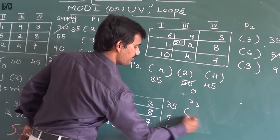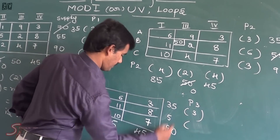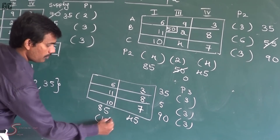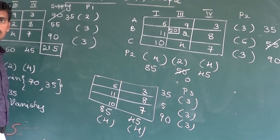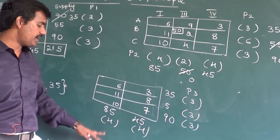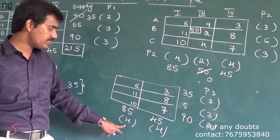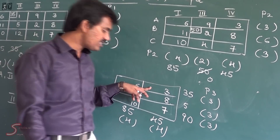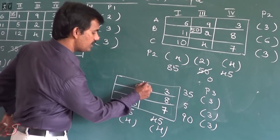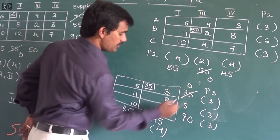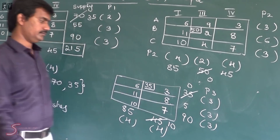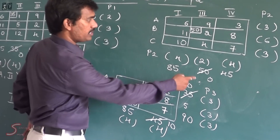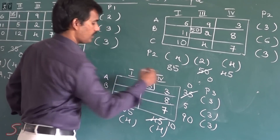Again we find penalty P3. Row differences are 3, 3, 3. Column penalties: 4, 4. Maximum penalty is 4 and there is a tie — the least cell is 6 for one group and 3 for another. We select the least cost cell (A,1) with cost 3. Allocate minimum of 35 and 40, which is 35. Balance becomes 0 for row A, balance is 10 for the column. Row A vanishes.